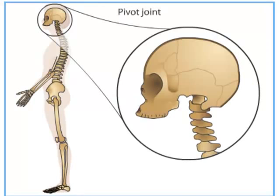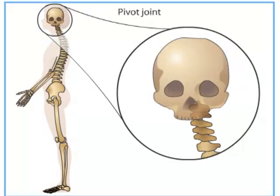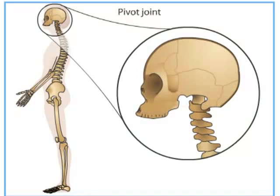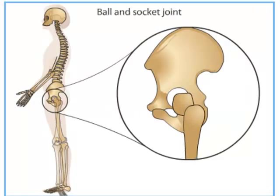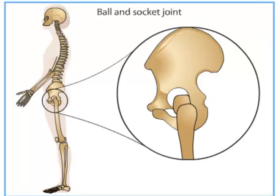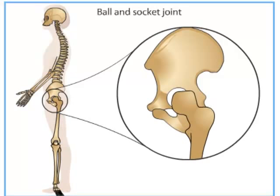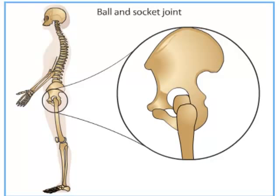The top two vertebrae of your spine form a pivot joint, which allows you to turn your head from side to side, such as when shaking your head no. A ball and socket joint, such as the hip joint, enables you to move your leg up, down, forward, and backward, as well as to rotate it in a complete circle.